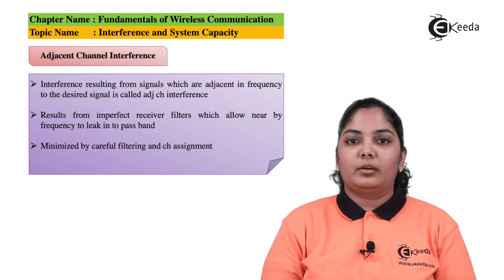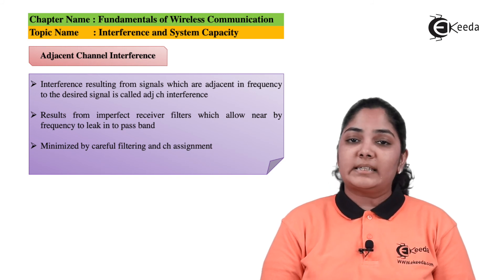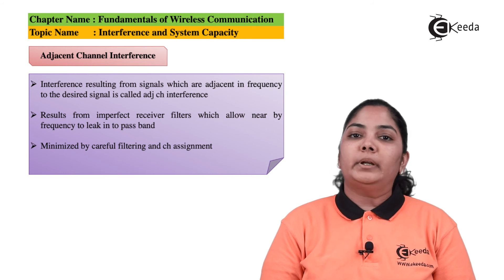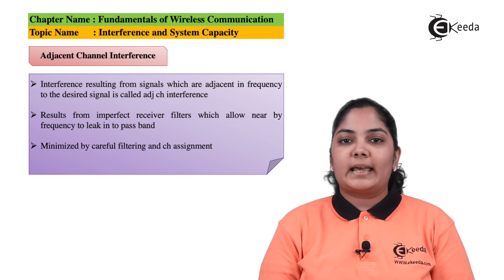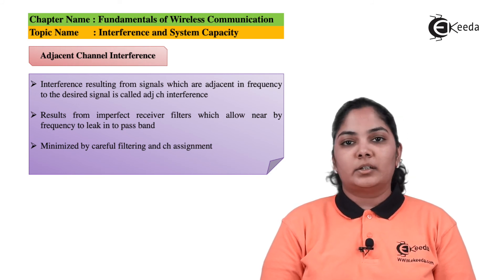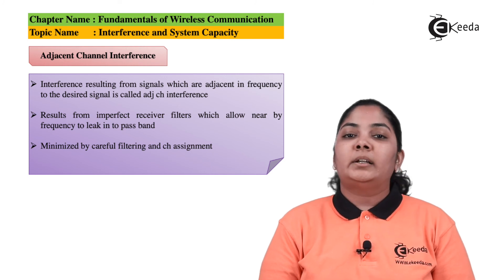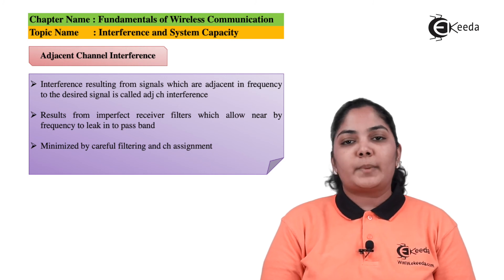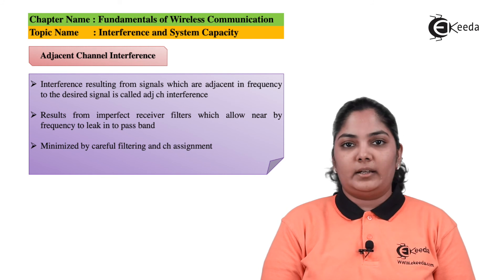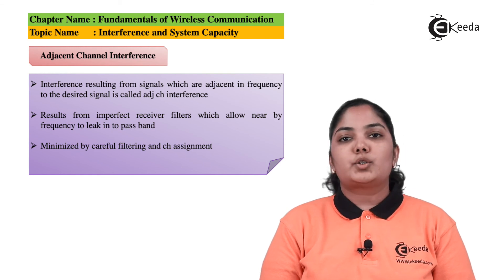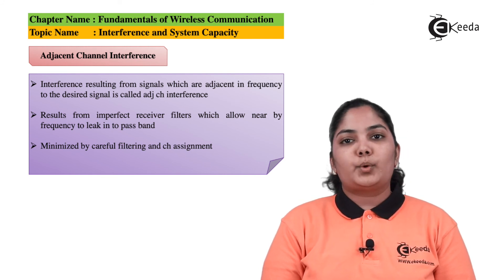In summary, adjacent channel interference is reduced by proper filtering of signals at the receiver, and by properly allocating frequencies in cells and neighboring cells — ensuring that a continuous band of frequencies is not allocated in a single cell and that neighboring cells use different frequency sets.